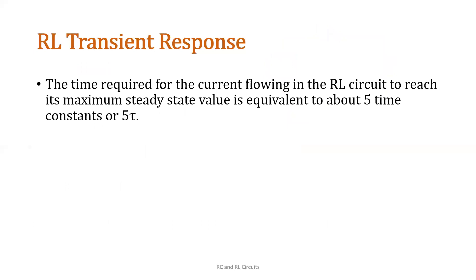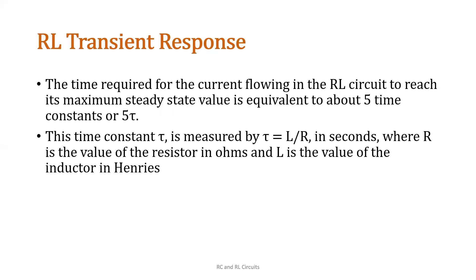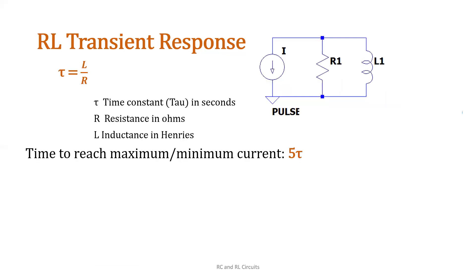Let's move on to RL transient response. This section will only discuss the time required for the current to reach maximum or minimum value in an RL circuit. The time to reach maximum or minimum current is equal to 5 tau as well. That time constant is equal to inductance over resistance — tau equals L over R. Resistance is in ohms and inductance is in henrys. So still, we have 5 tau for the time to reach maximum or minimum current.